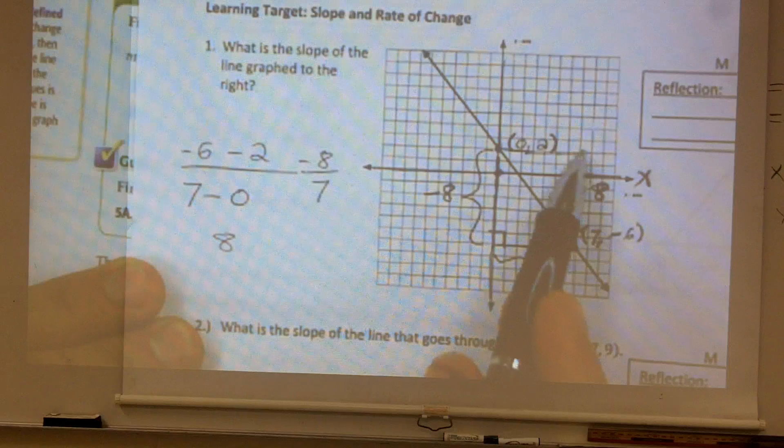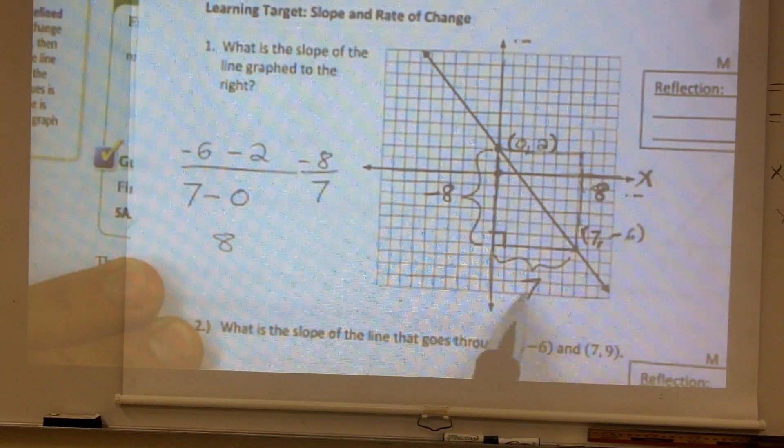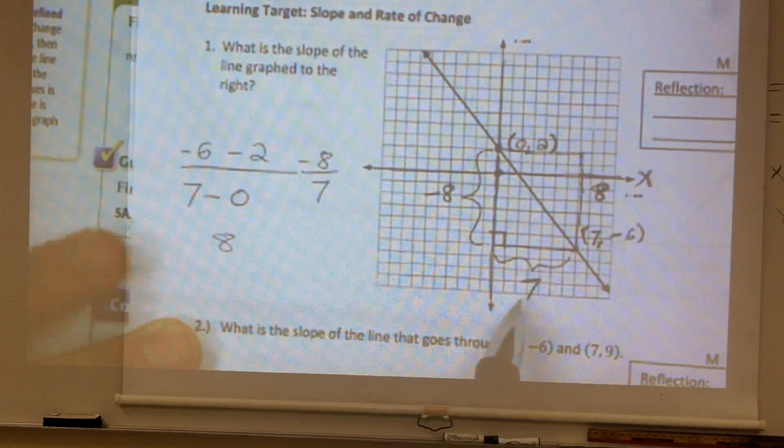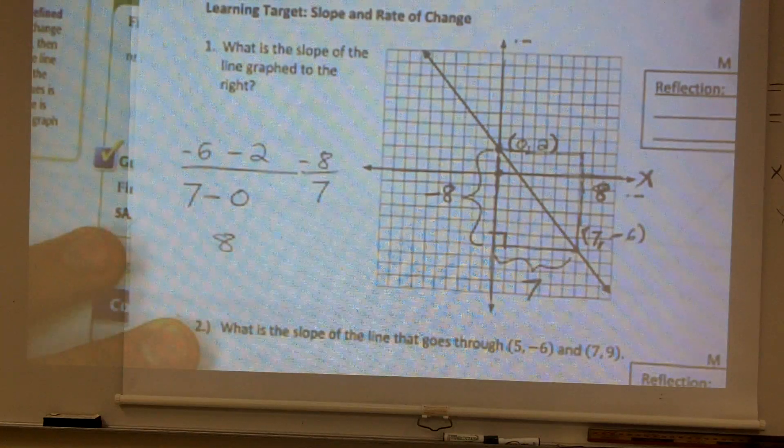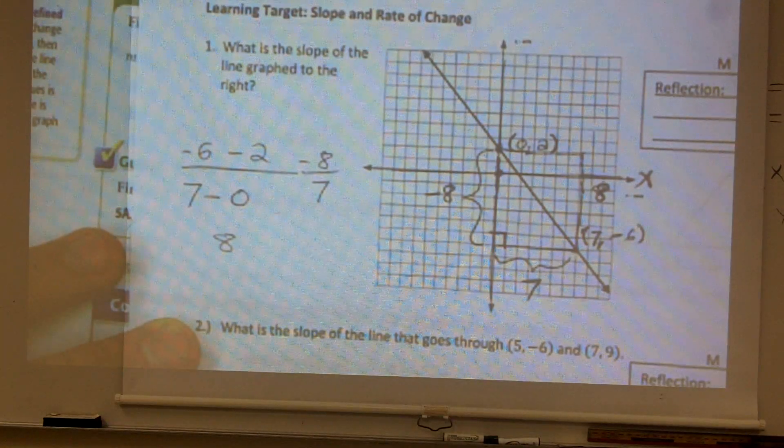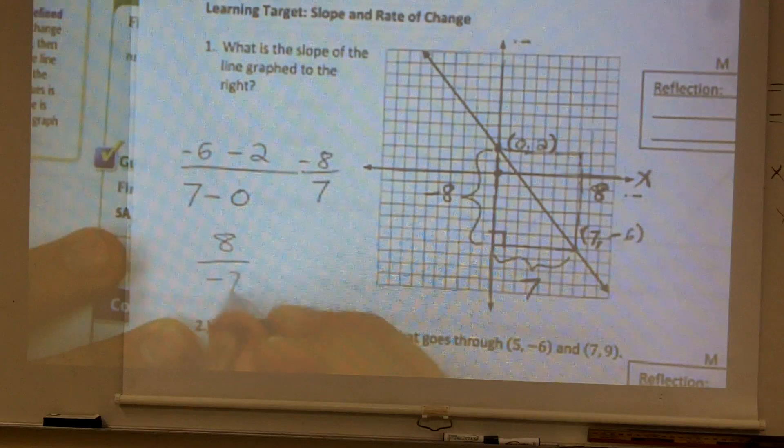And then from right to left, you still went over 7 units, but it would have gone over 7 units to the left. And when you traveled to the left, that means you're going in the negative direction. So you would have got a negative 7.